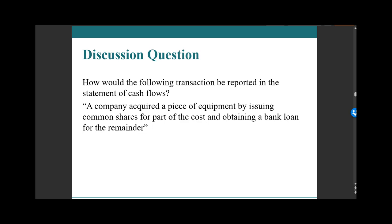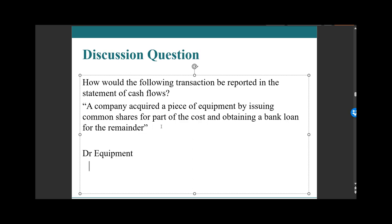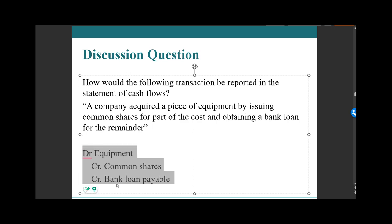How would this transaction be reported on the statement of cash flow? A company acquired a piece of equipment by issuing common shares for part of the cost and obtaining a bank loan for the remainder. The journal entry is a debit to equipment, credit to common shares, credit to bank loan payable — no cash in that entry. Therefore, this would be disclosed in the notes as a significant non-cash investing and financing activity.